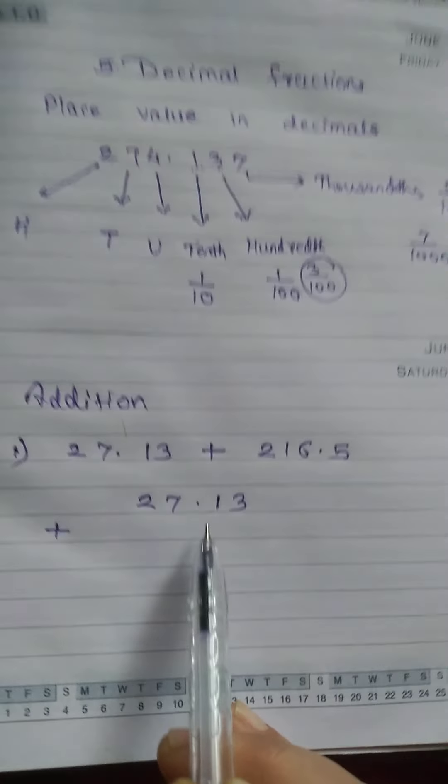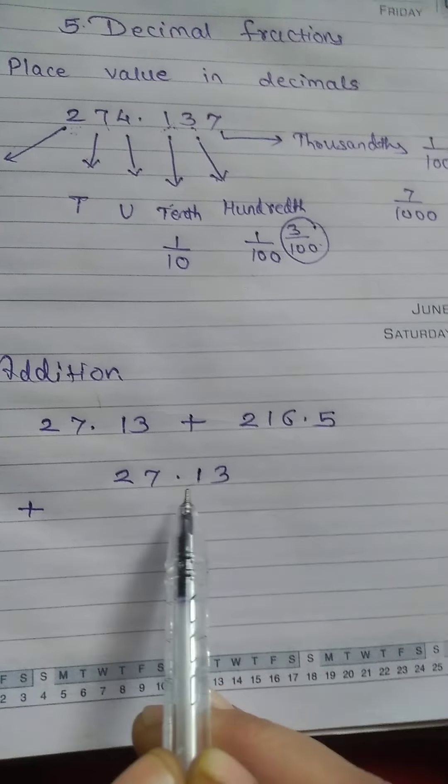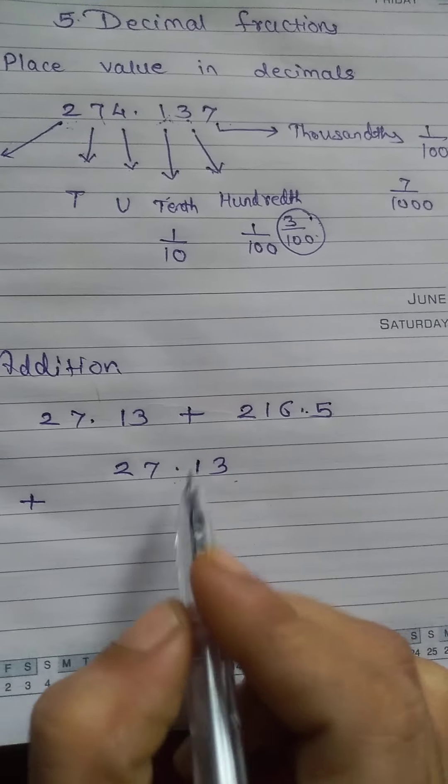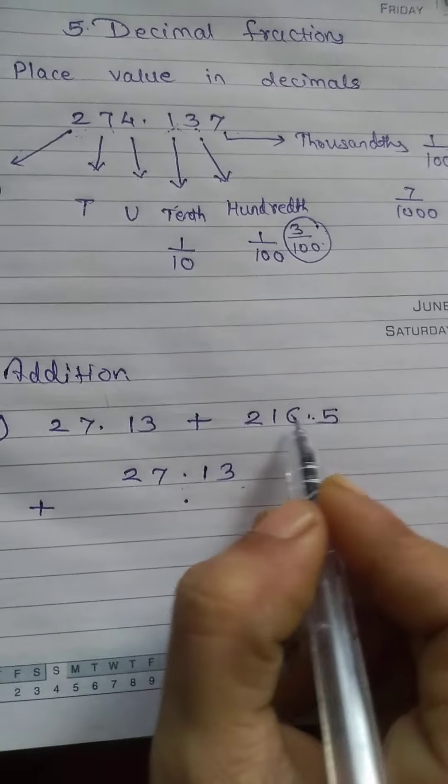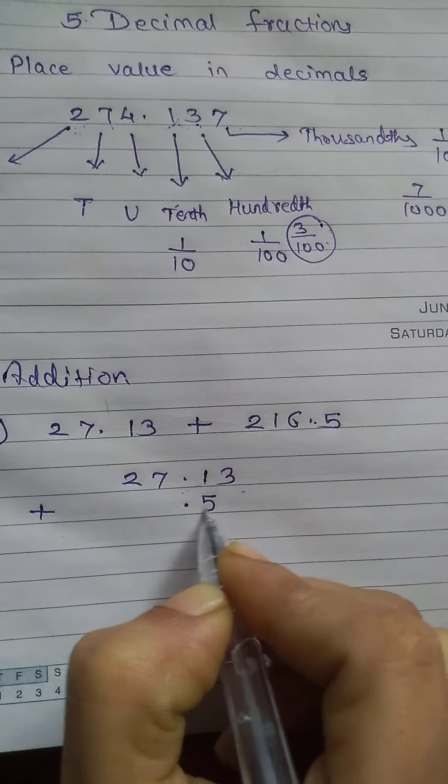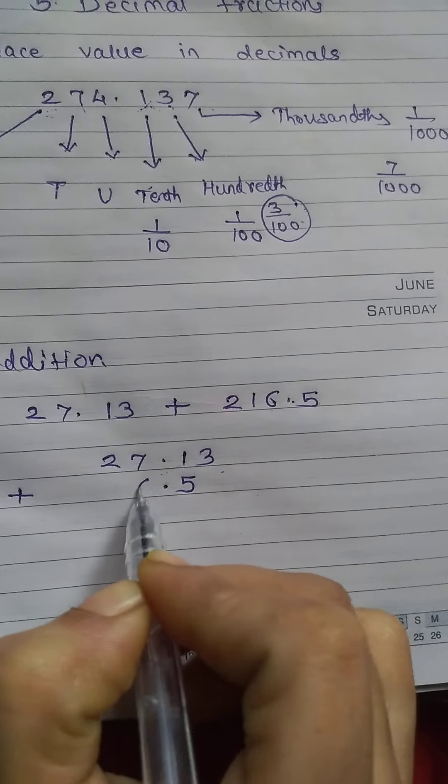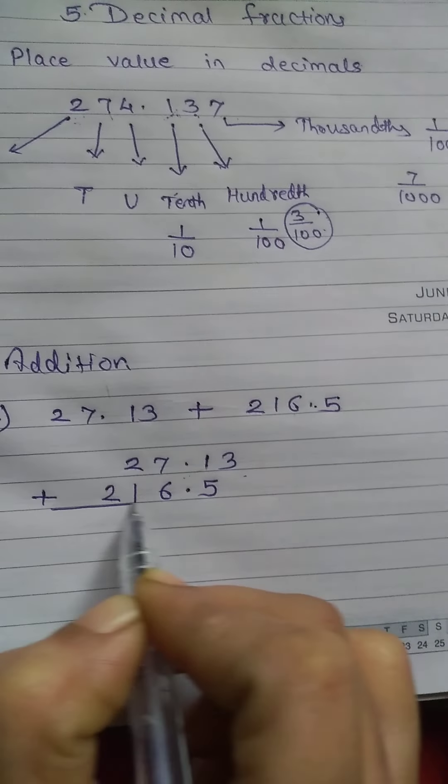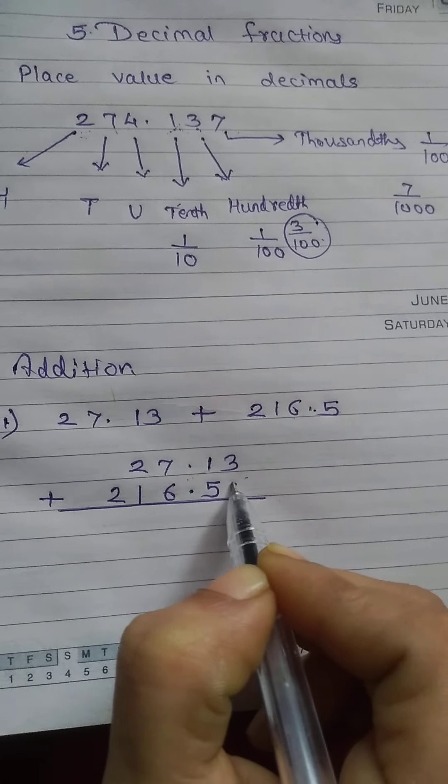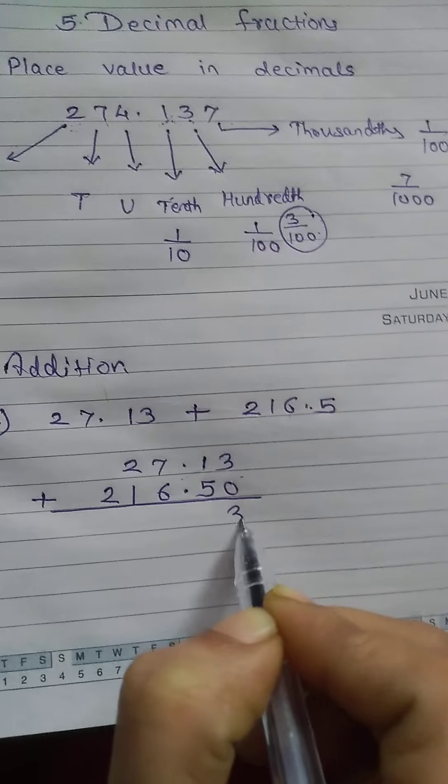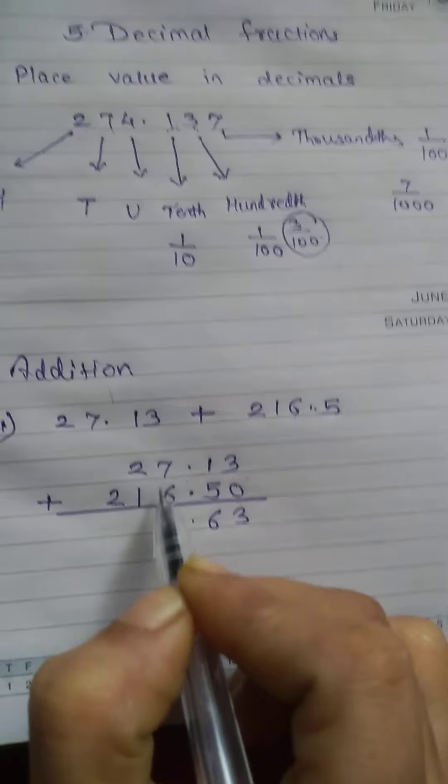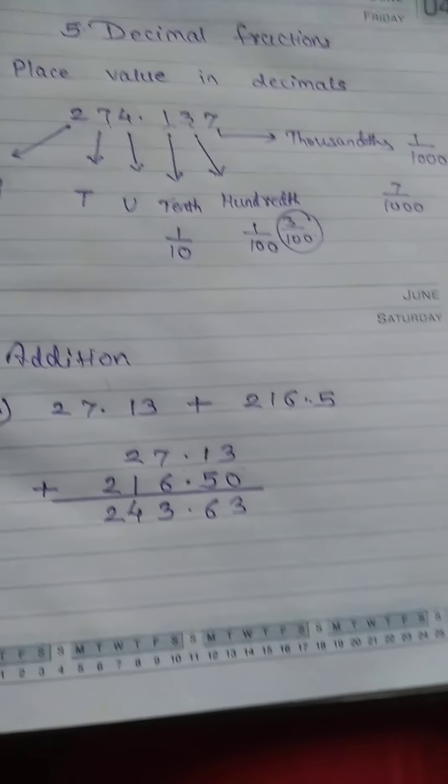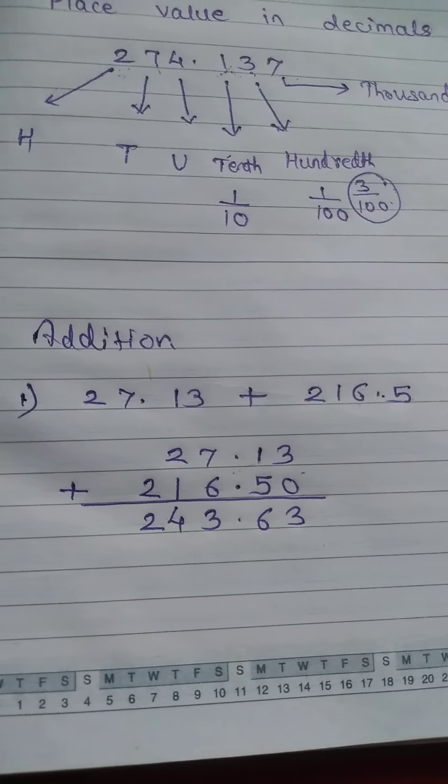The numbers after decimal point should come after the decimal - the point should be given below the point. Now after this point which number is there? 5. So 5 will be here, and before this number is 6, 1, and this is 2. So this will be your addition: this will be 0, this 3, 6, this is 13, this is 4, and this is 2. This way you have to add the decimals.